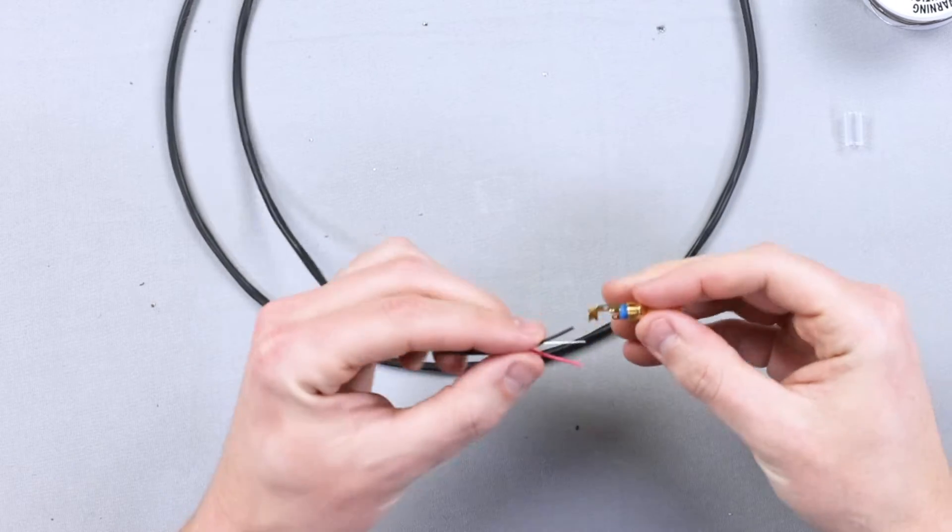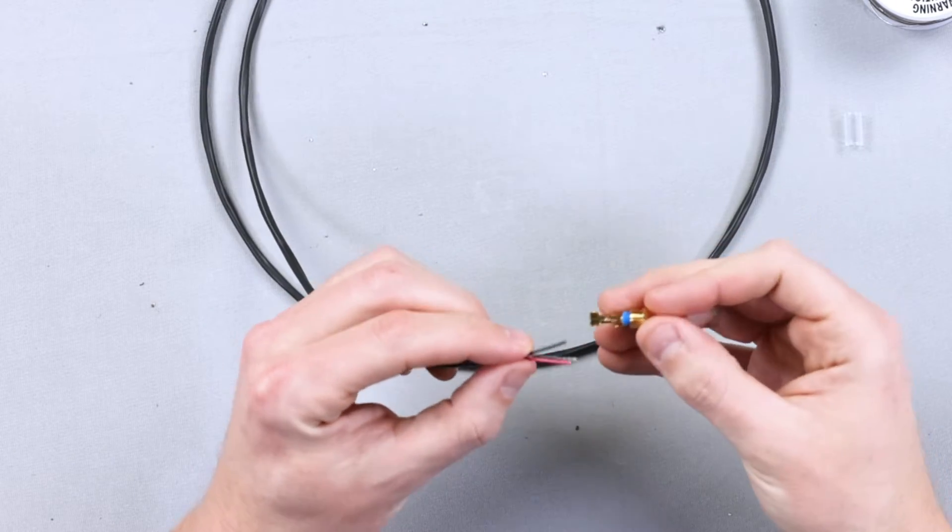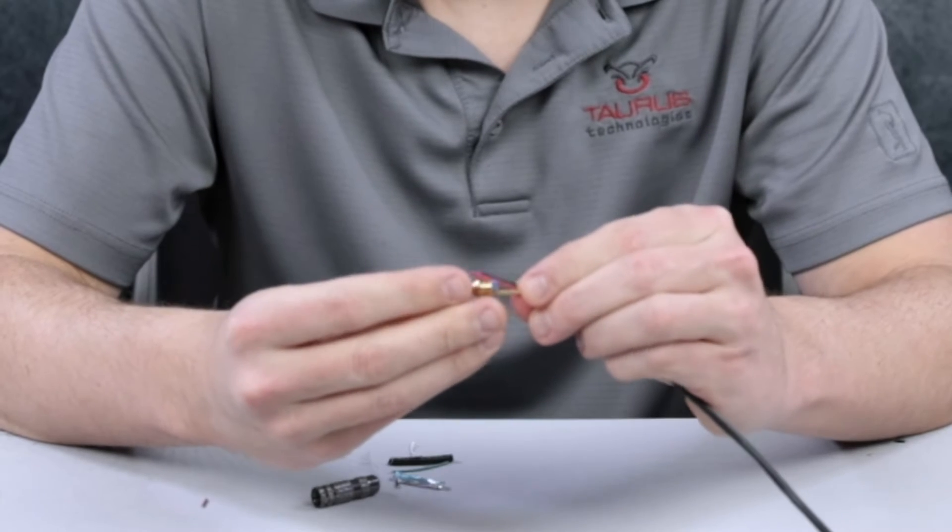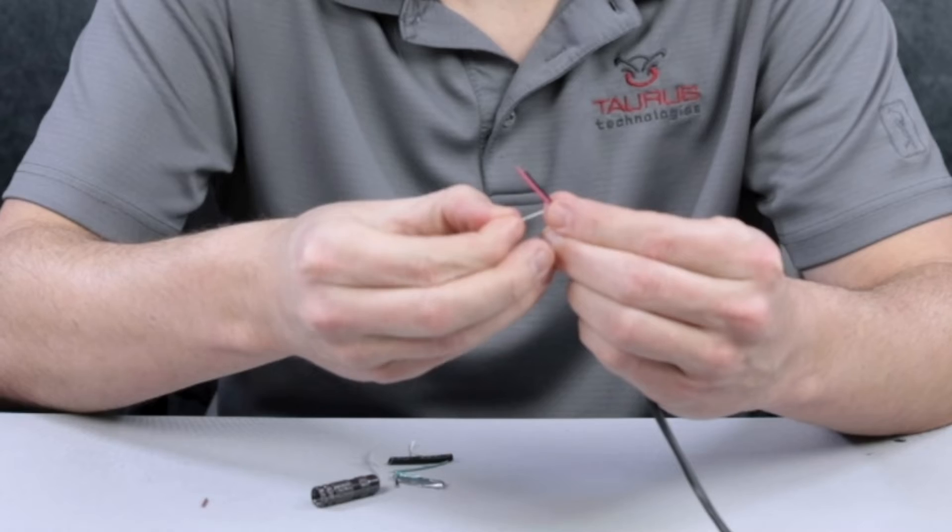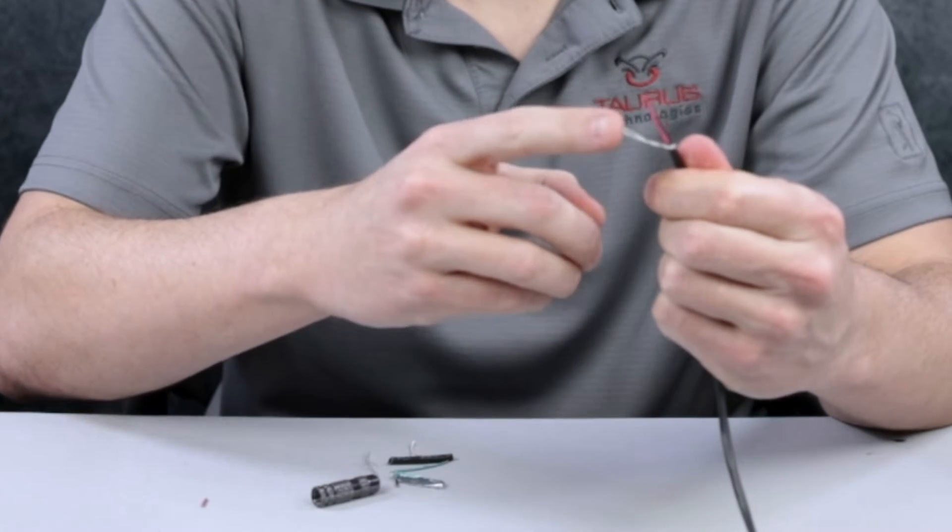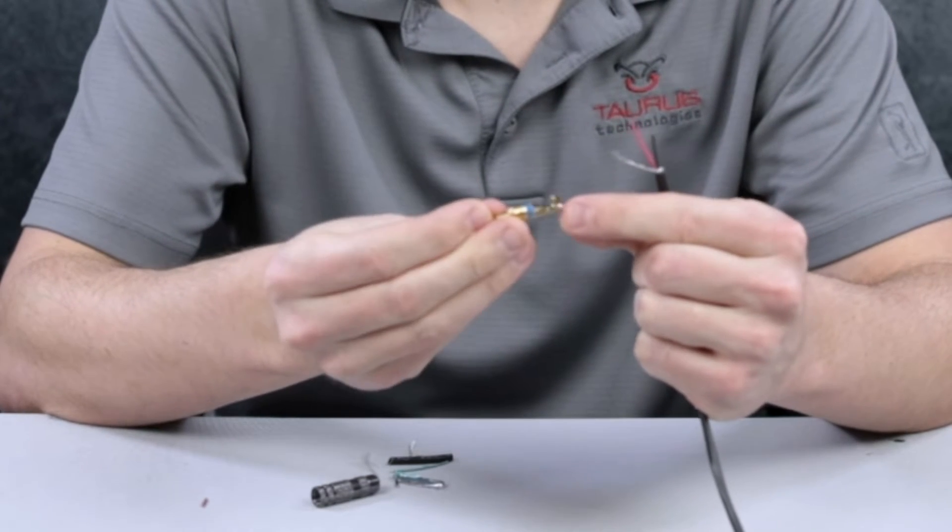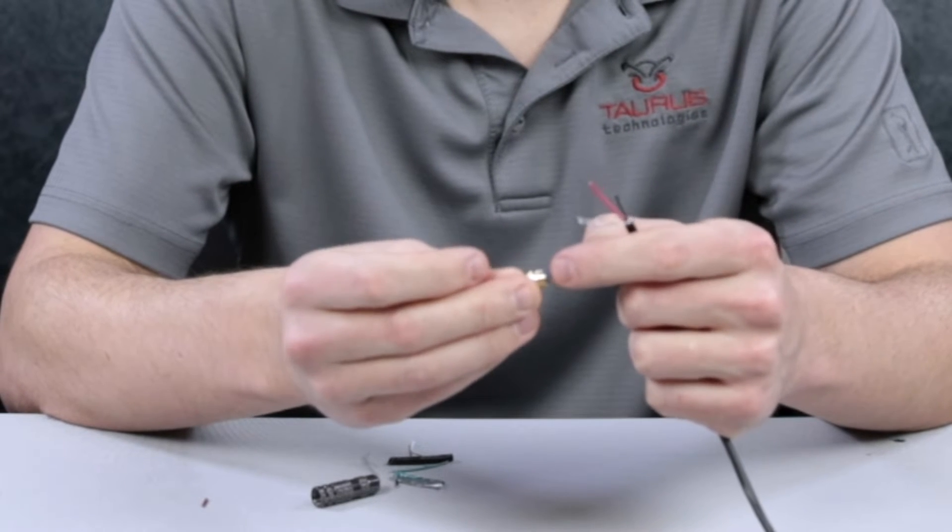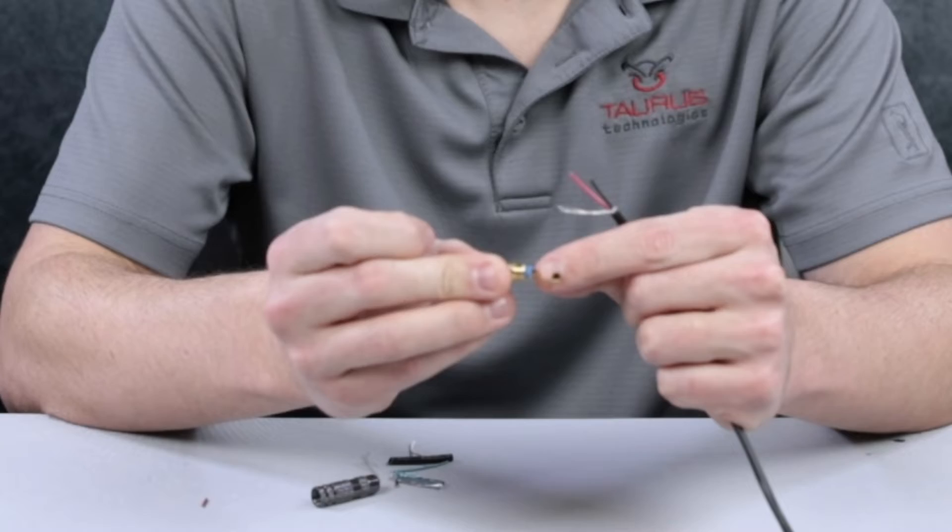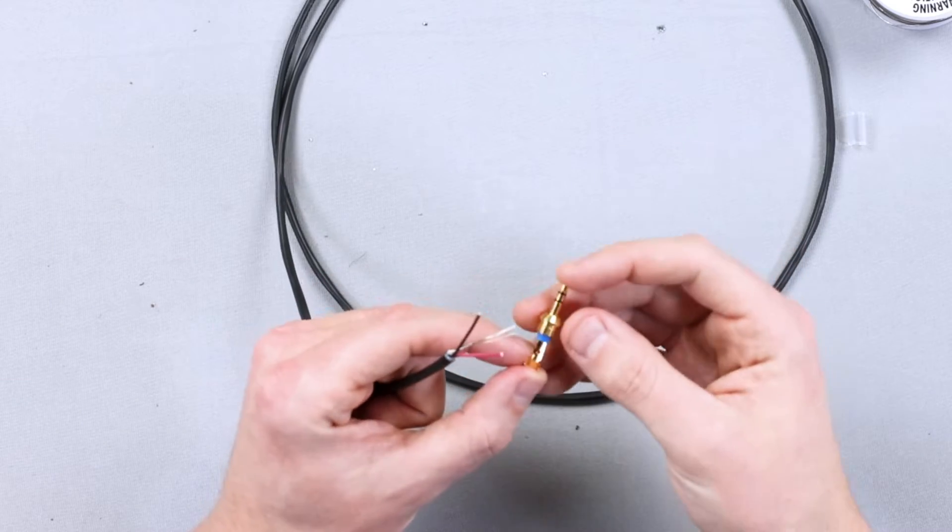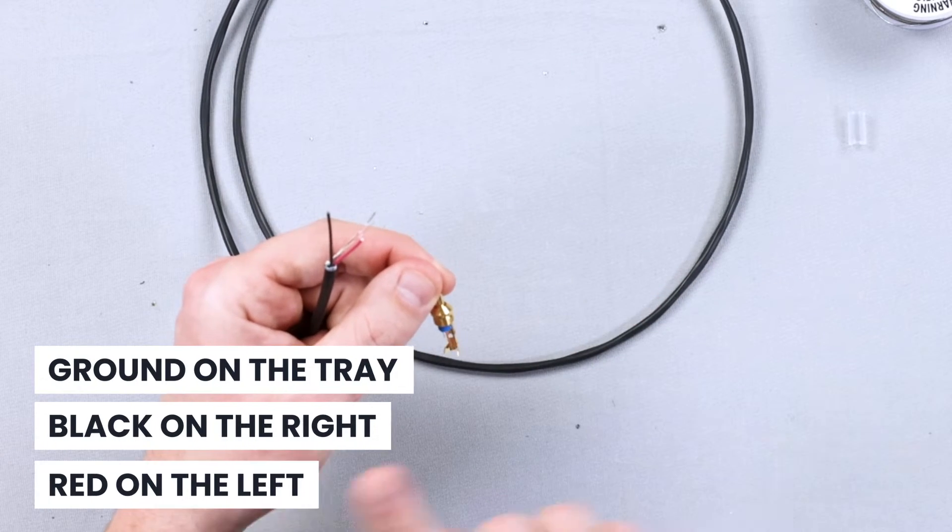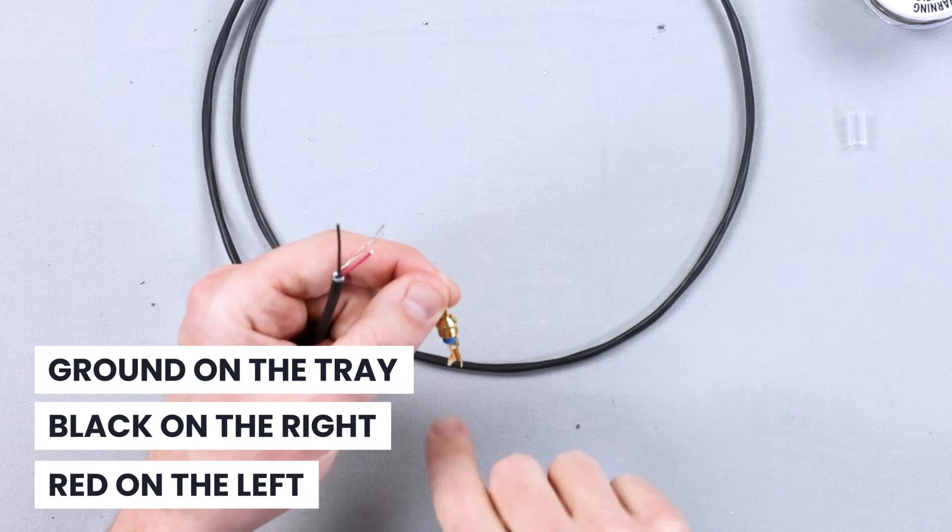So if you see, you can kind of size it up with the actual connector itself. So to do that, the ground, this piece right here, is going to sit in the bottom tray, and the red is going to go on the tip, and the black is going to go on the ring. So if you're looking at it with the connector away from you, or the plug-in away from you, you have red on the left, black on the right, and ground in the tray.